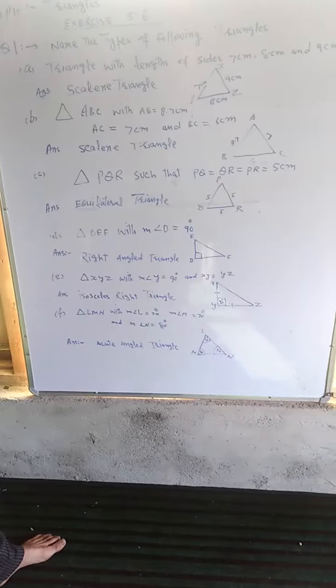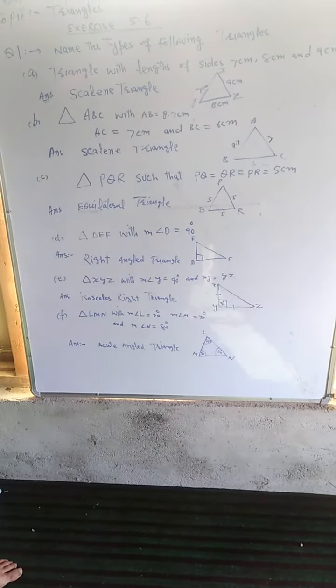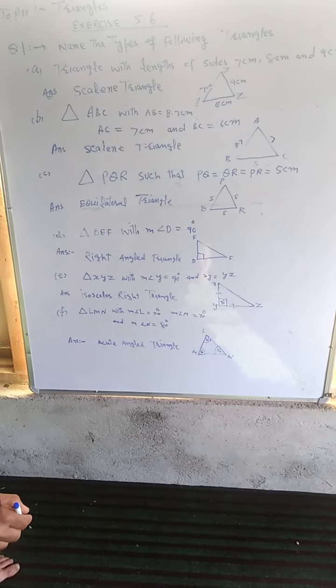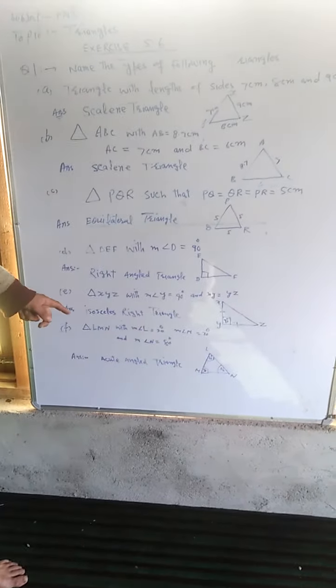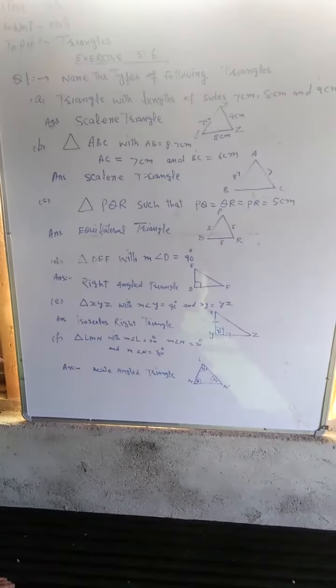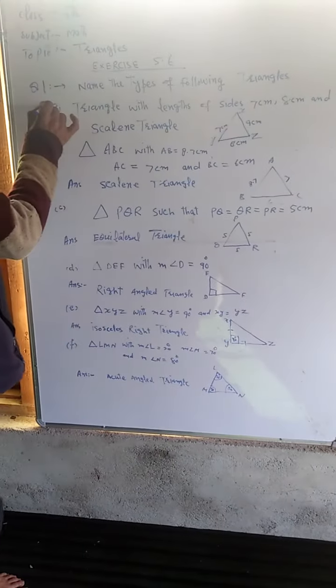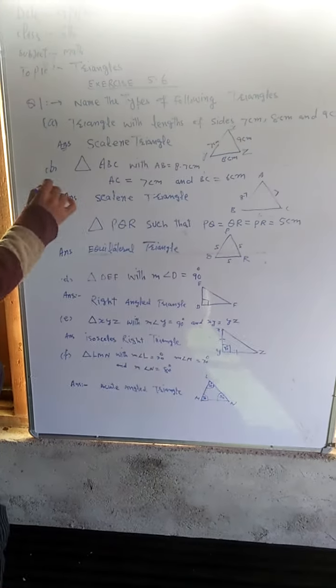Triangle LMN with angle L measuring 30 degrees, angle M measuring 70 degrees, and angle N measuring 80 degrees. Since no angle measures 90 degrees, this is an acute angled triangle.